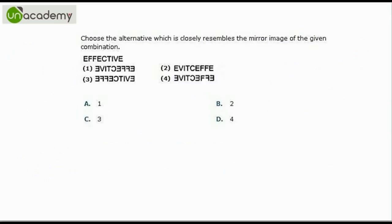Now let us see one more example. Again, the same problem statement. We have to choose the alternative which is closely resembling the mirror image of the given word. So the given word is effective. Let us first observe the options. We do not see any option. The only letters that get affected on 180 degree inversion are V, T and F.